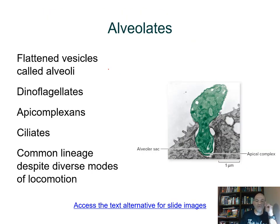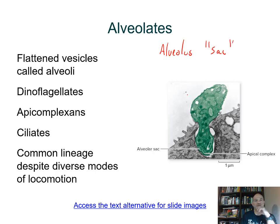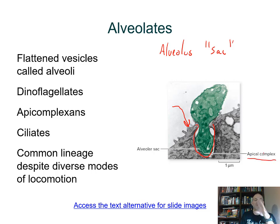The alveolates get their name because at the plasma membrane, they have little sac-like structures — 'alveolate' means sac. An electron micrograph shows this sac-like structure. In the case of apicomplexans, they have an organelle called an apical complex contained within the alveolar sac, associated with their ability to get into a host cell. Apicomplexans are all parasitic.